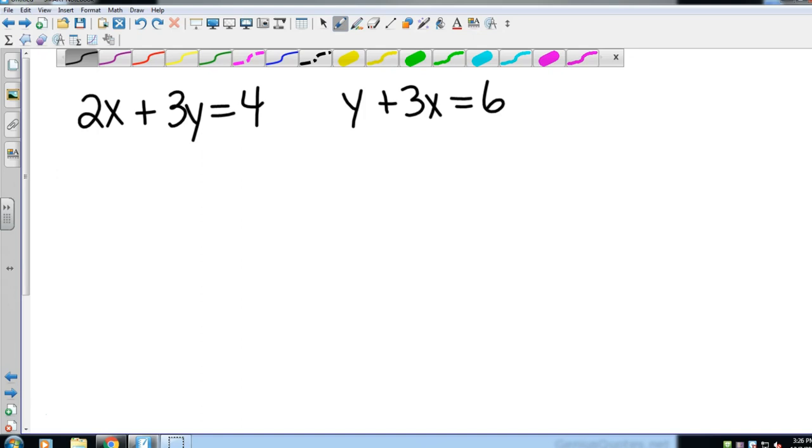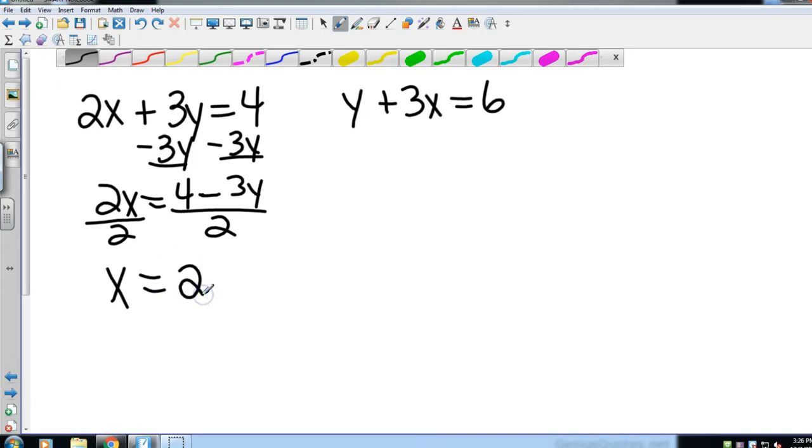And so I'm going to choose x's, and I'll show you why here in just a minute. Let's solve for x in both of these. So I'm going to subtract 3y, and that gives me 2x equals 4 minus 3y. I have to divide both sides by 2, and that gives me x equals, let's look at both of these separate, 4 divided by 2 is 2, and negative 3y divided by 2 is just negative 3y divided by 2. I can't do anything there.